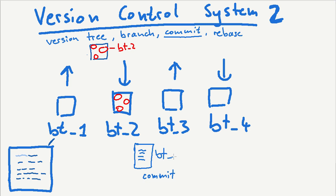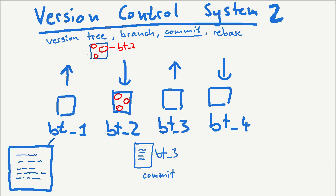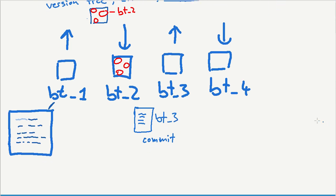And when you have a consistent state, you commit to this state. You commit to the consistency of this document, and in that case you create a new version — in this case, version number 3. Keep this in mind. I want to give you a slightly different way of expressing this — something you might have already seen on the internet. You usually describe it as dots. This is bachelor thesis version 1.